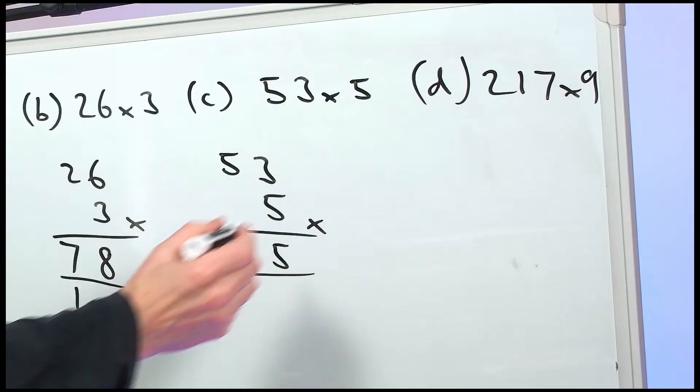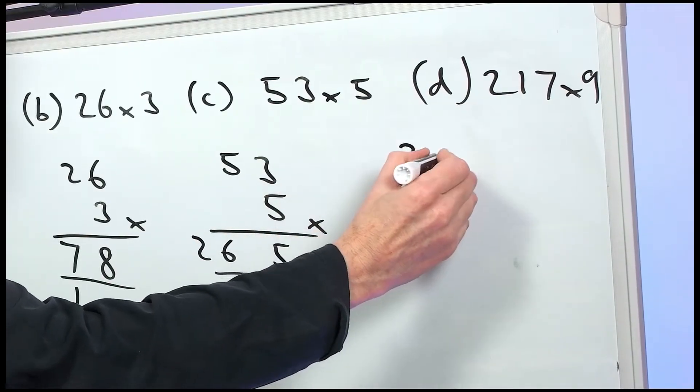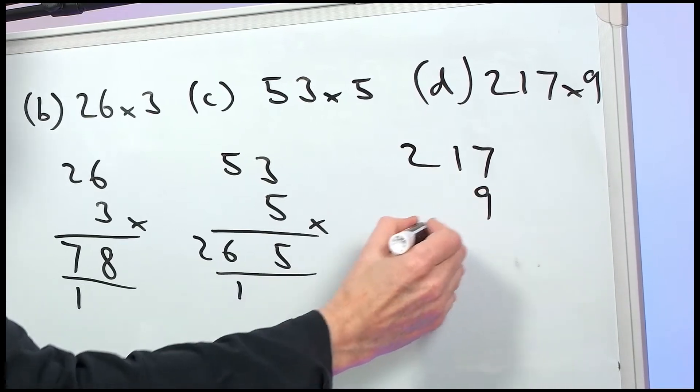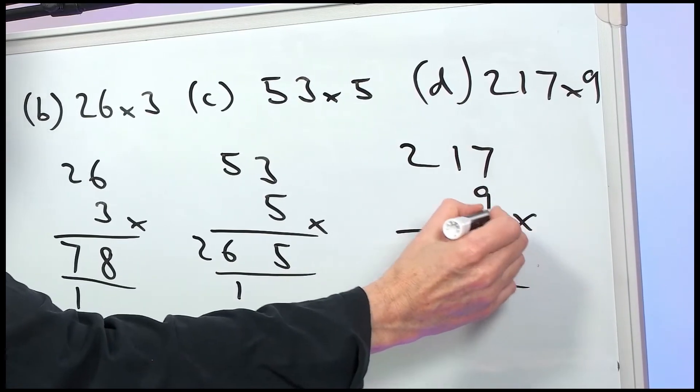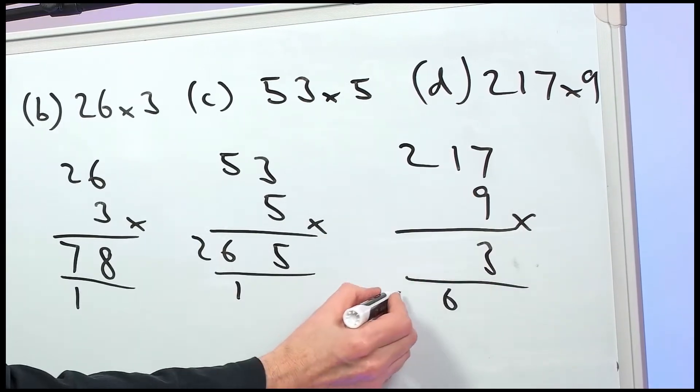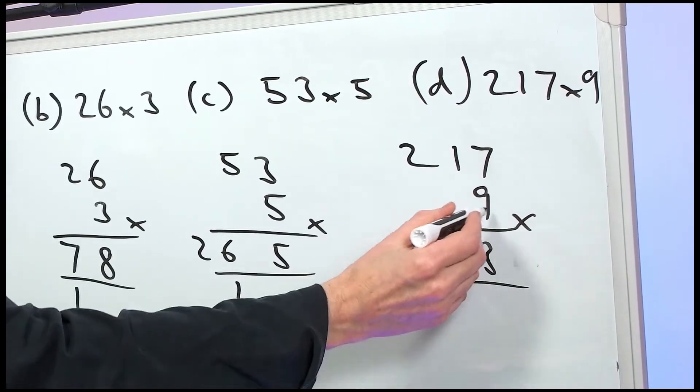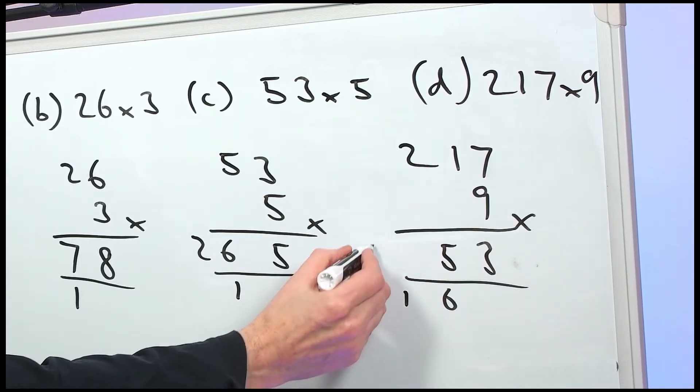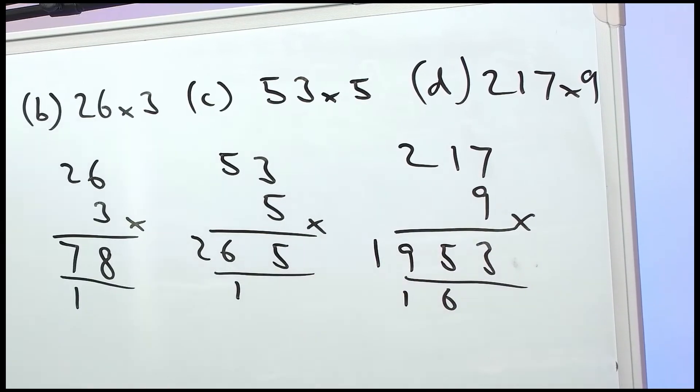Part D, 217 times 9. So 7 nines are 63. 9 ones are 9. That makes 15. And 2 nines are 18, and 1 makes 19. 1,953.